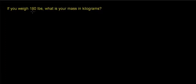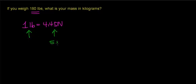Suppose you want to find your body mass given your weight in pounds. The first thing you need to know is that 1 pound equals 4.45 newtons. This is the relationship between weight in the English system and weight in the SI system.